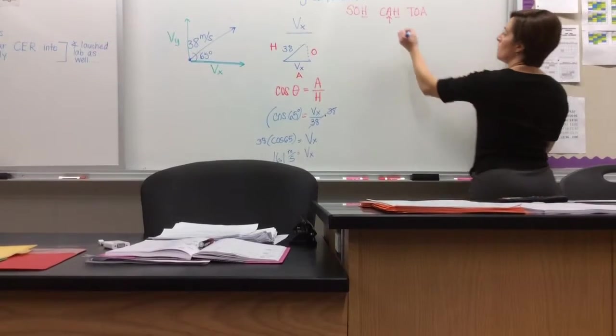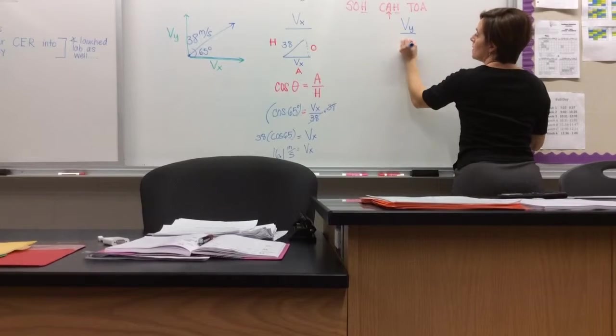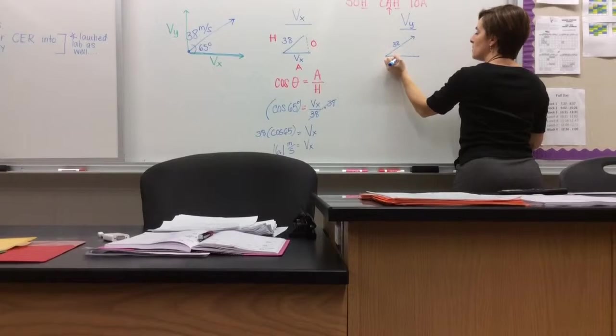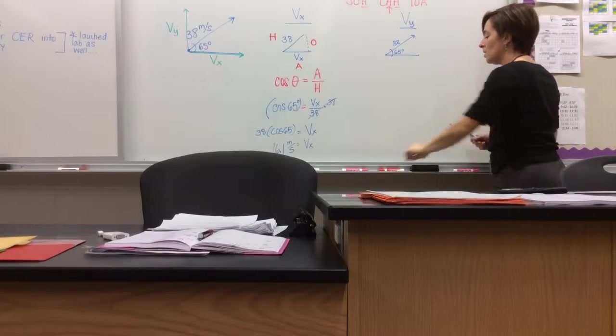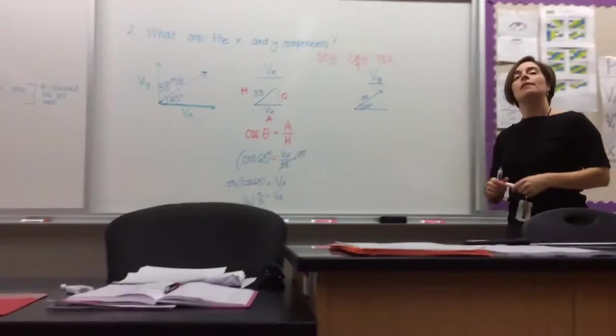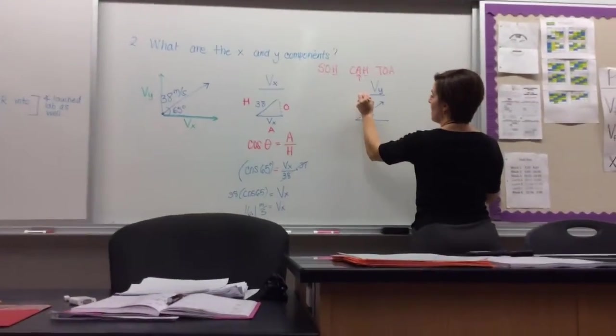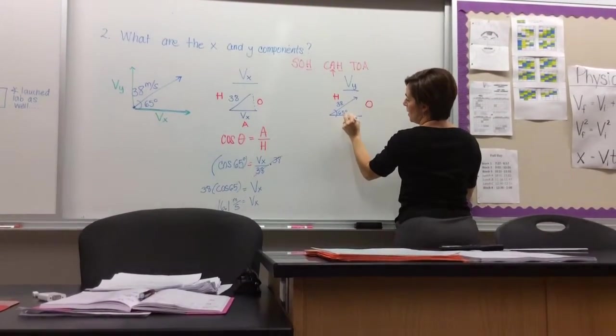The next thing I'm going to do is I'm going to find the component of motion in the y plane. So again, I'm going to draw my triangle. I'm going to say it's leaving at 38 meters per second. The angle is 65 degrees. I'm going to label each side again. By labeling each side, it just helps me get a frame of reference of this is my hypotenuse, this is my opposite, this is the adjacent side.